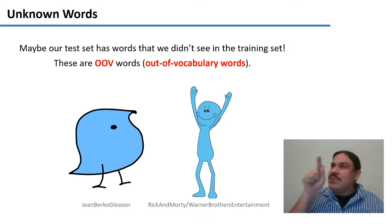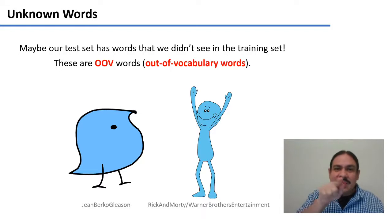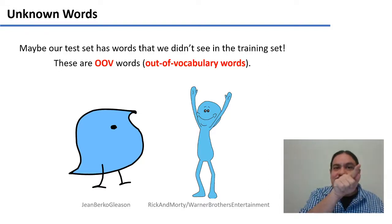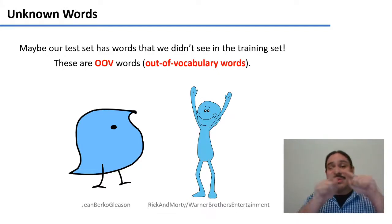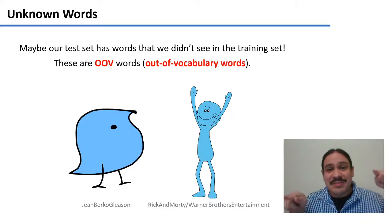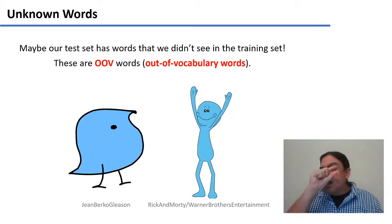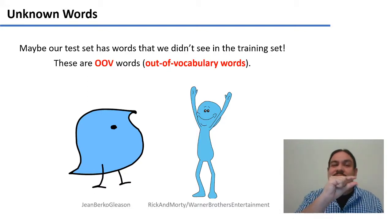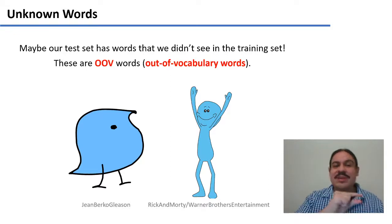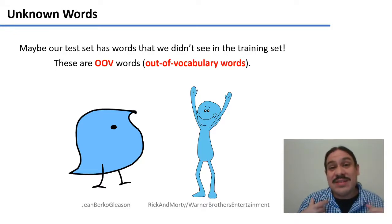In bigram matrices, for example, we find probabilities by looking at whether a word is in the rows of the matrix and another word in the columns of the matrix. If the word is not there, then we cannot do anything. So we're going to have an explicit part of our n-gram matrix dedicated to out-of-vocabulary words, and we're going to calculate a probability for them even if we have never seen them before.